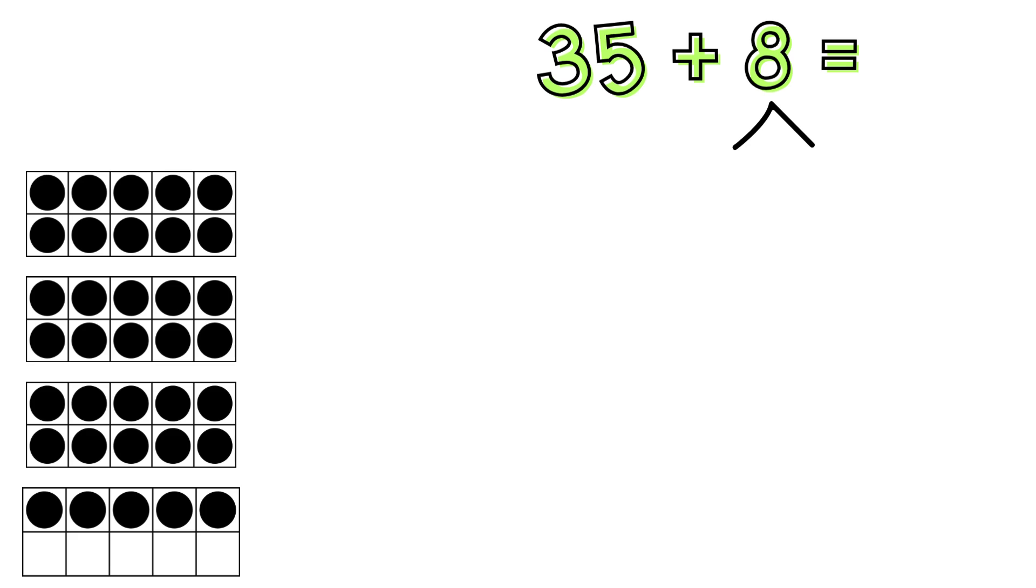Here's 35 with 10 frames. You have a job to do. Break up the 8 by figuring out how many chips go in the last 10 frame and how many chips are outside. Create a number bond under the number 8 and show how you broke it up. Press pause while you work. Then press play. Press pause now.